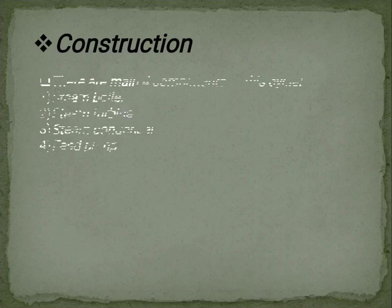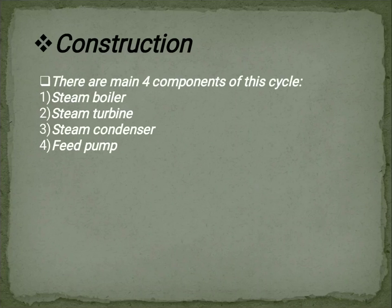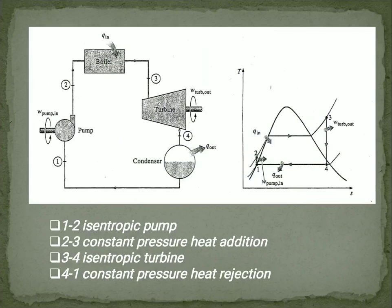Next, let's see the construction. Basically this cycle consists of mainly four main components. First is steam boiler, second steam turbine, third steam condenser, and fourth is feed pump. So feed pump is nothing but it's a simple pump. And as we know about the water turbine, boiler, pump and condenser we have learned in a previous semester. Boiler is nothing but it's a simple device which is used for converting water into steam. And so let's start the cycle.